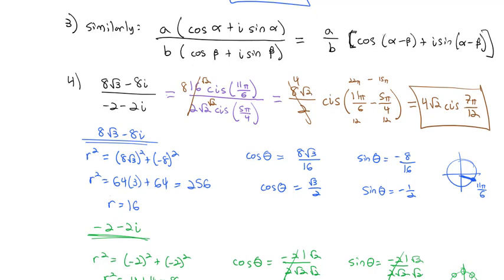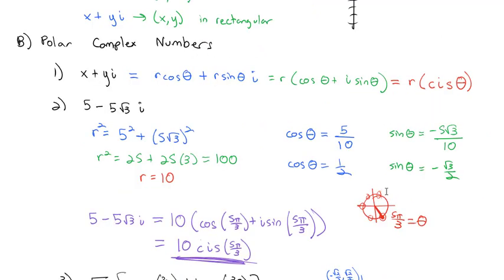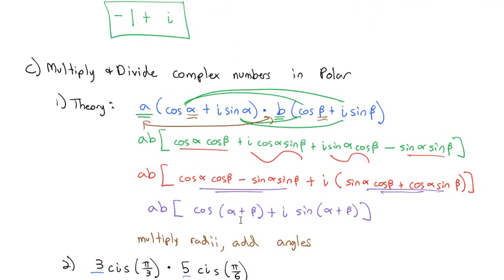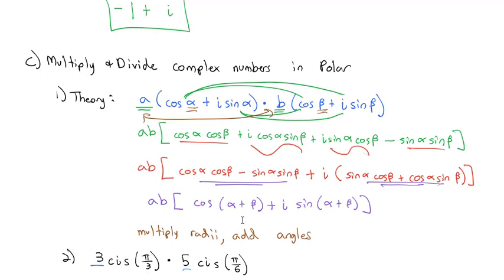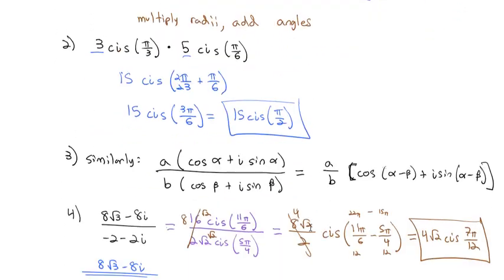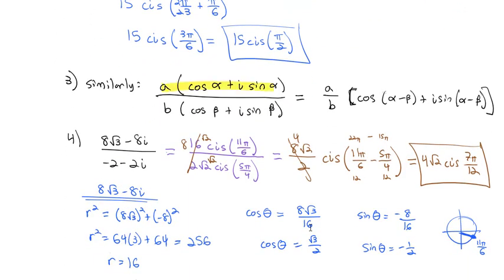Polar coordinates become very useful with complex numbers because the operations are easier in polar form than in rectangular form. First convert the rectangular complex number to polar form. Then, to multiply, multiply the radii and add the angles. To divide, divide the radii and subtract the angles. Practice this on the homework assignment.